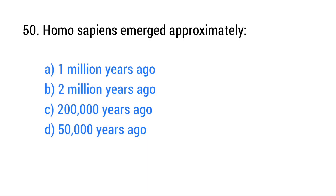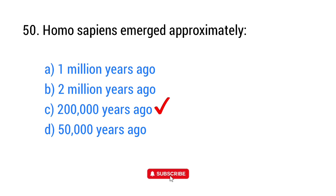Question number 50. Homo sapiens emerged approximately? The right answer is option C: 200,000 years ago.